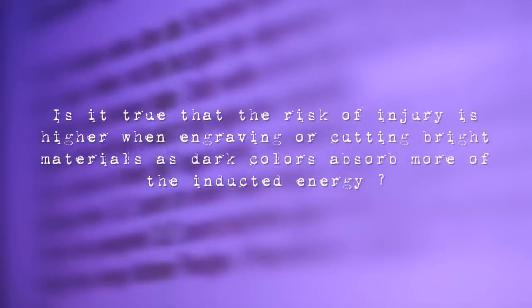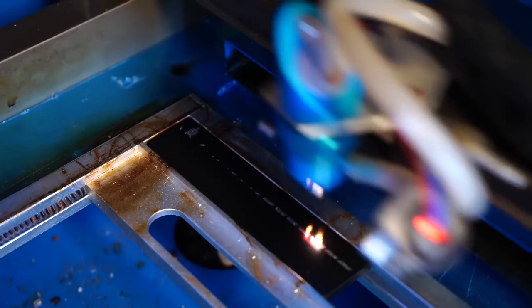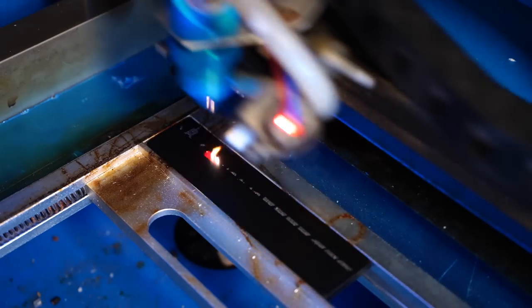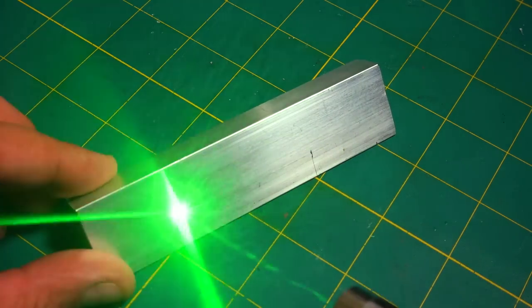Is it true that the risk of injury is higher when engraving or cutting bright materials as dark colors absorb more of the inducted energy? Professor Eichler says it depends on the wavelength of the laser. Generally speaking, it is safer to use materials with a rough surface to avoid too much direct reflections. Burning of spray paint from a metal surface, for example, is a very dangerous task, as the shiny metal surface obviously acts as a mirror.